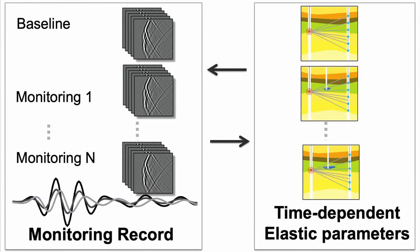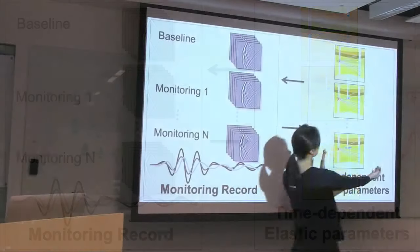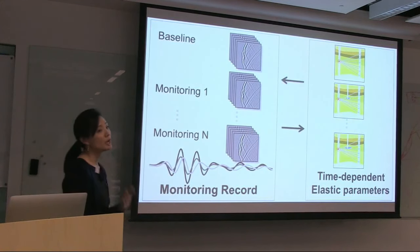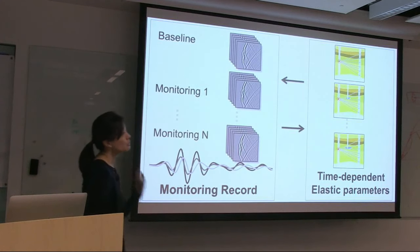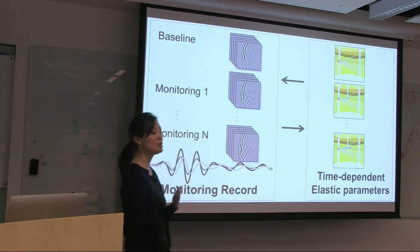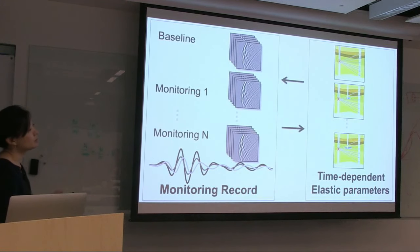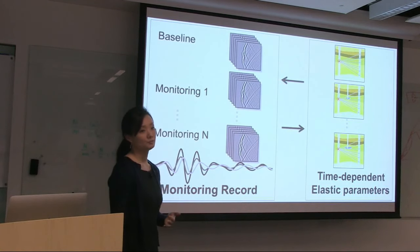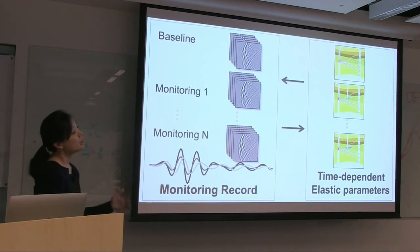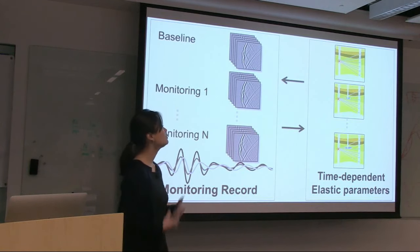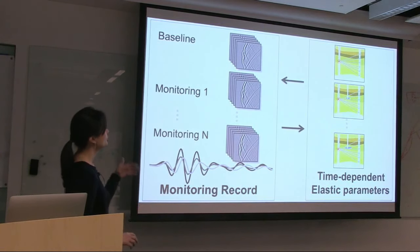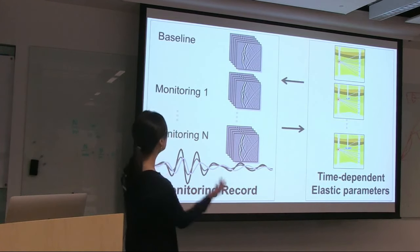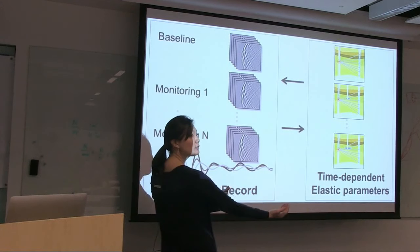For example, if you drill a well between the two survey wells and inject fluid, you'll change the elastic parameters near the well. By repeating the survey during or after injection, you get waveform snapshots at each time. Before injection is the baseline data, and once we start injecting, we call the data monitoring 1 through monitoring N. Our goal is to capture time-dependent elastic parameters from these monitoring datasets.